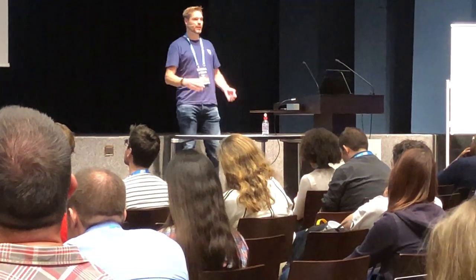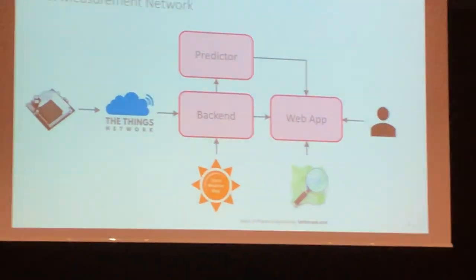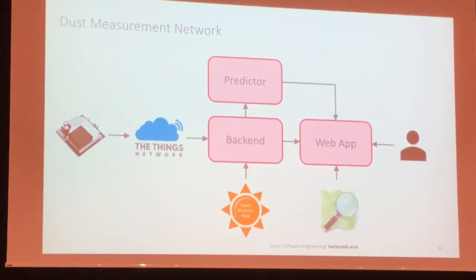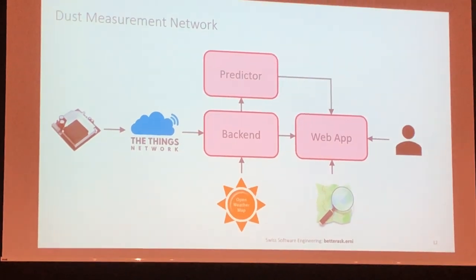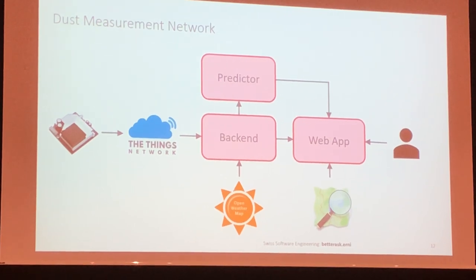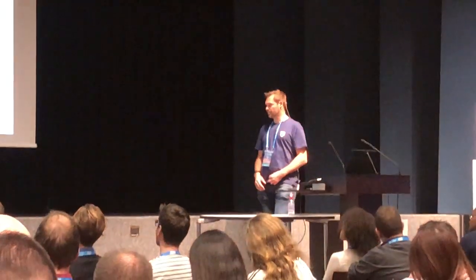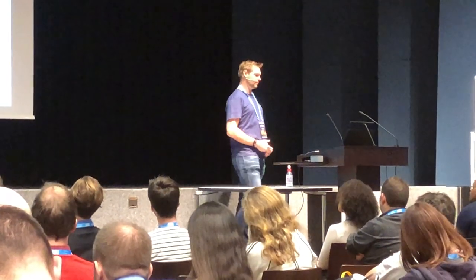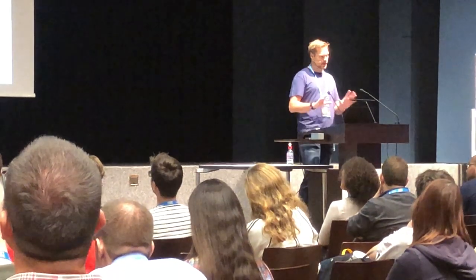With that theory in mind, how do we create our product? We need a sensor on the left that collects these air particles. We connect that to our back-end through the Things Network — an IoT network that manages and controls data flow from the device to the cloud. The back-end uses open weather data and combines that with the sensor data, providing it to the predictor to make forecasts. Then the web app displays that information on a map and provides it to the user. This is the overall scheme of our product.